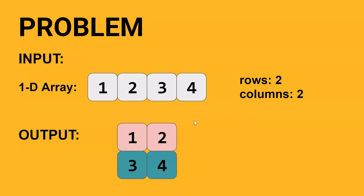Let's see what this problem is all about. You are given a 1D array and the rows and columns which would be there in the two-dimensional array as an output. As you can see in the example, the output is a two-dimensional array with two rows and two columns.